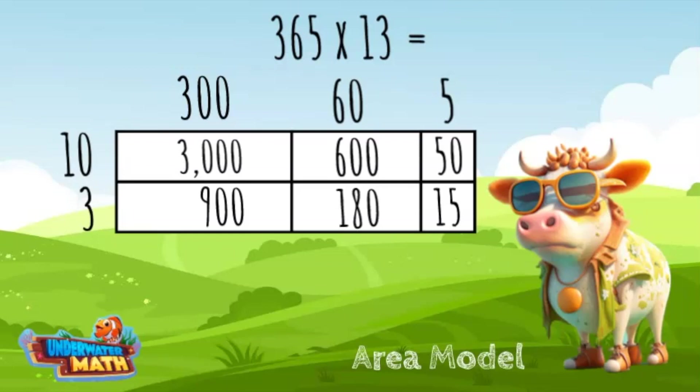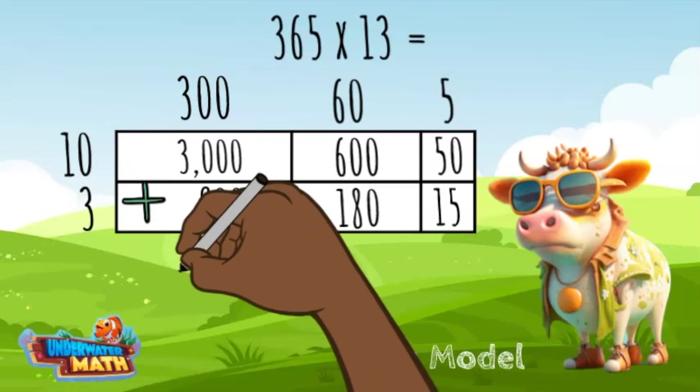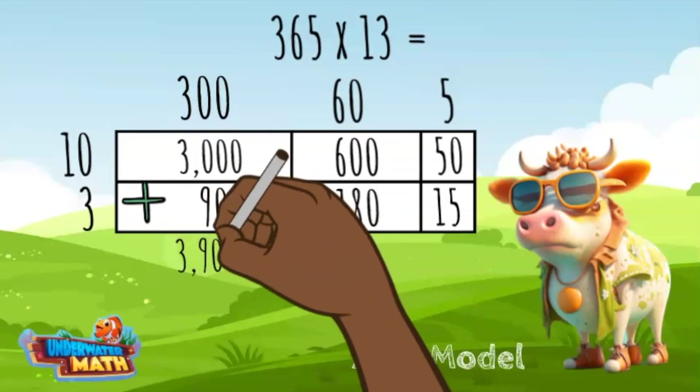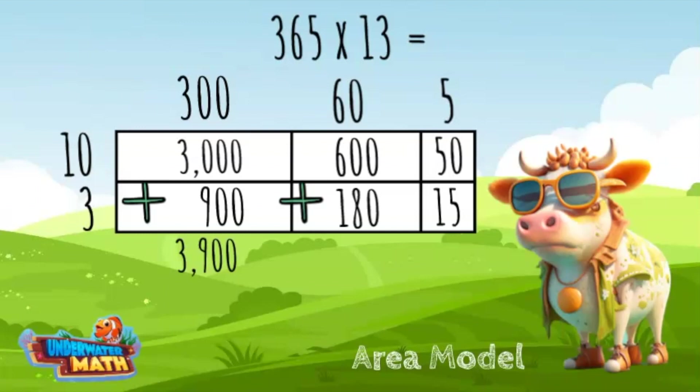Now we are going to find the sum of all the products. I like to add down the columns. 3000 plus 900 equals 3900. 600 plus 180 equals 780, and 50 plus 15 equals 65.